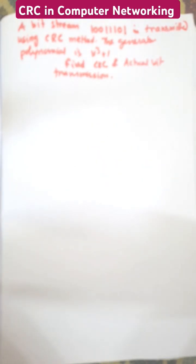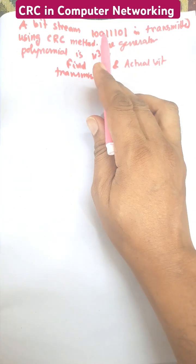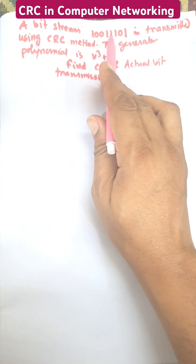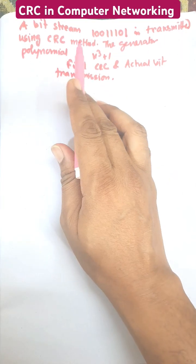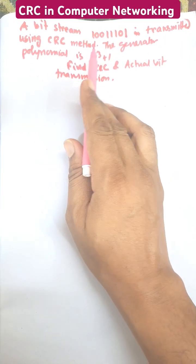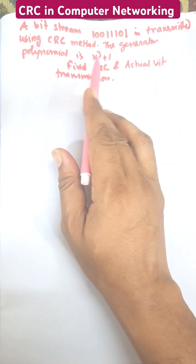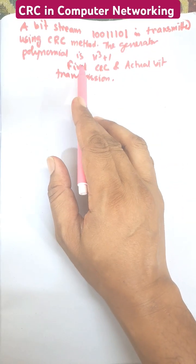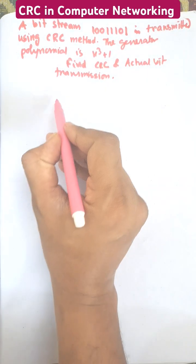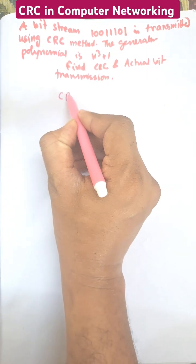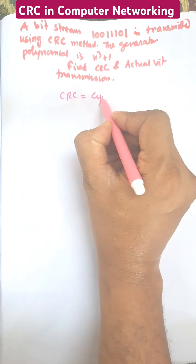Hi everybody. I am going to solve the following problem. A bit stream 10011101 is transmitted using the CRC method. The generator polynomial is x³ plus 1. Find the CRC and the actual transmission. Full form of CRC is cyclic redundancy check.